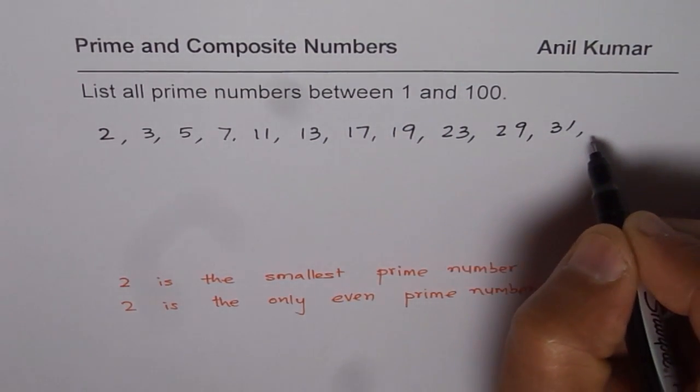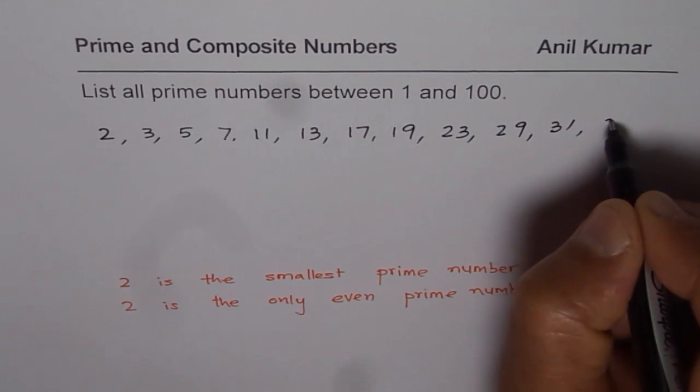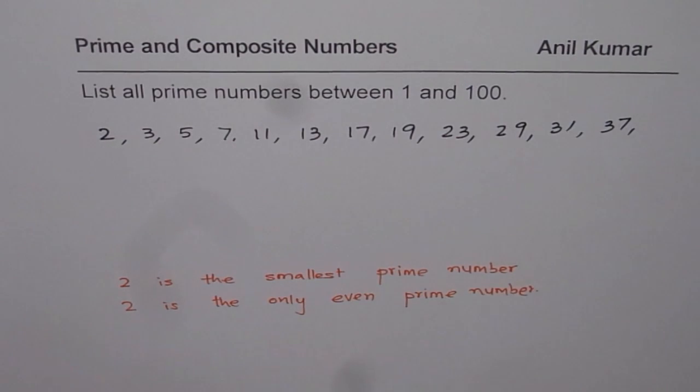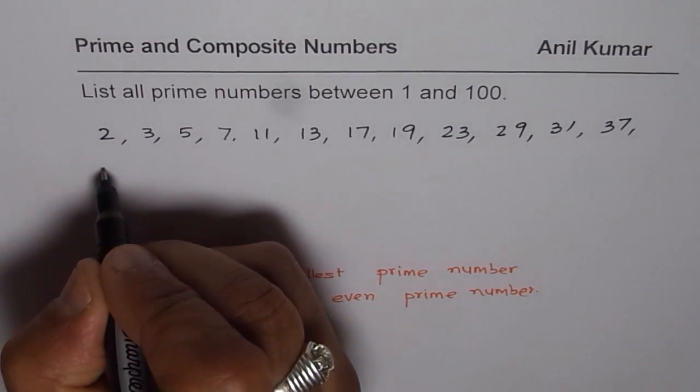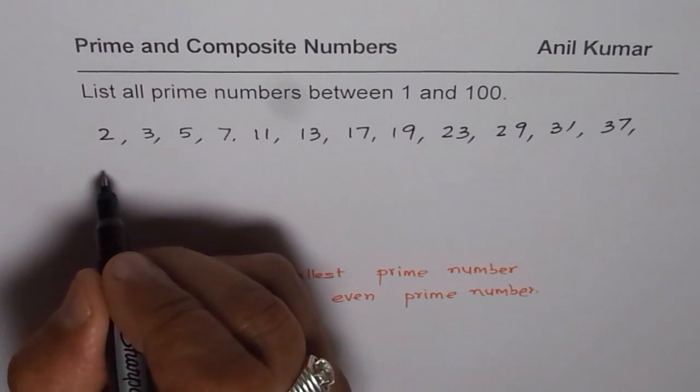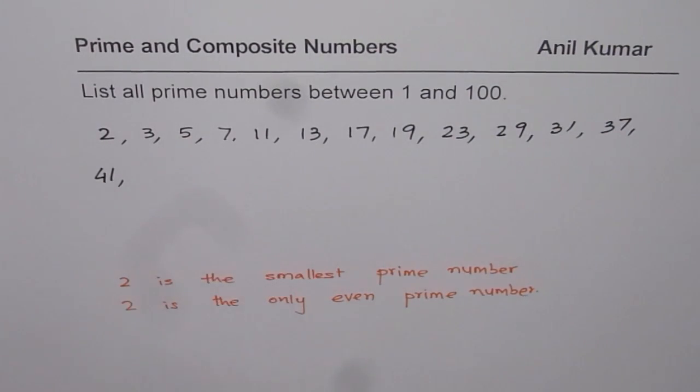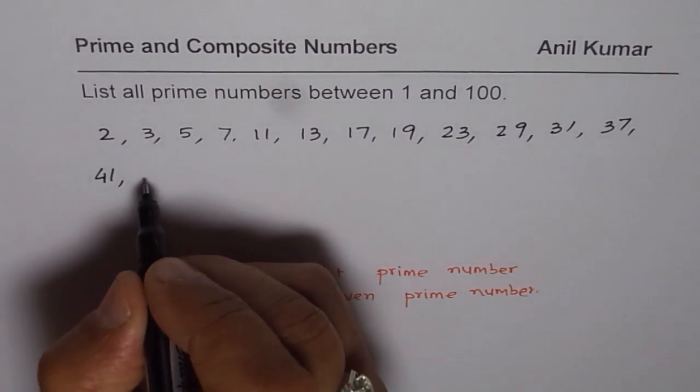38 is even. 39 is a prime number. So we have gone almost to half of the list now. 41...